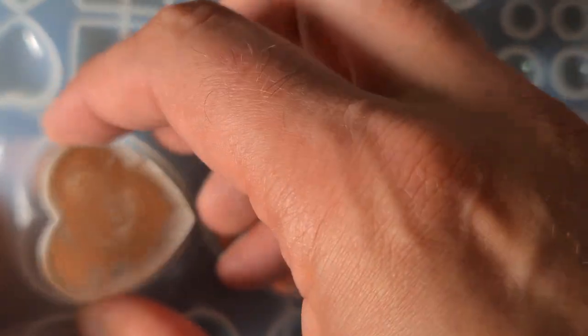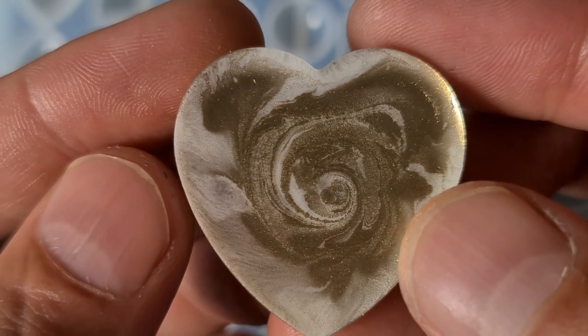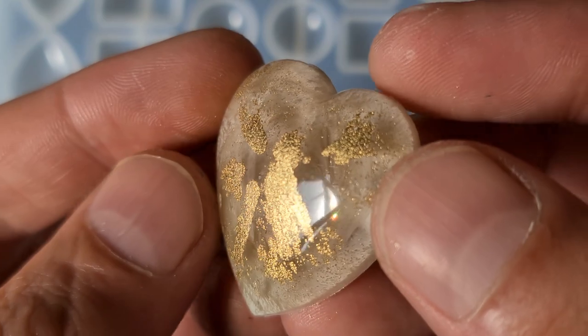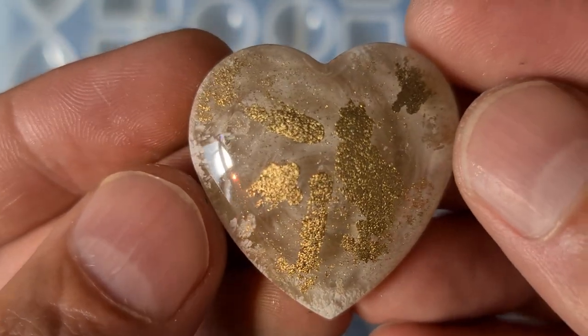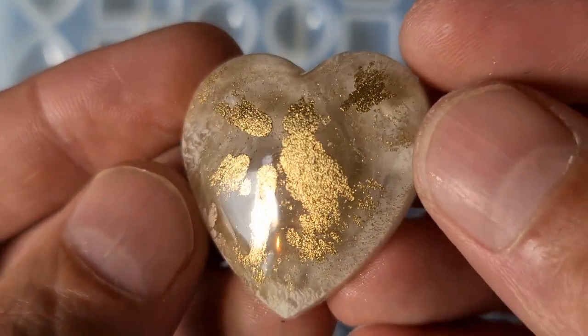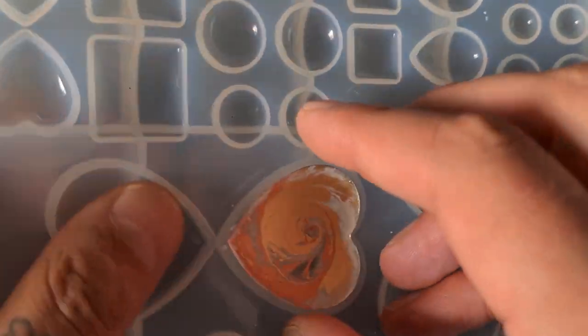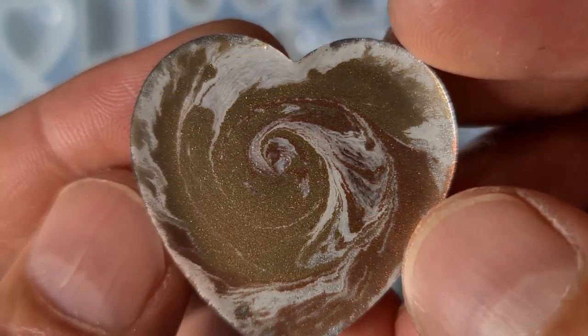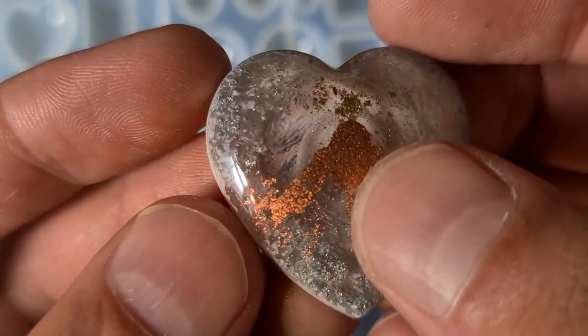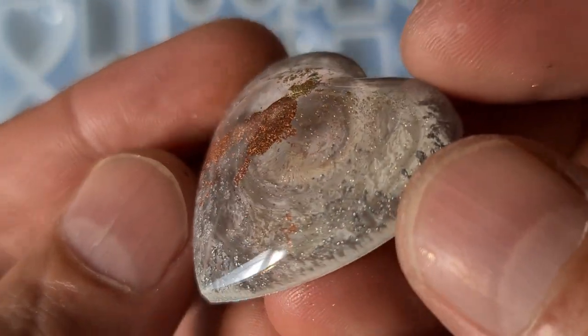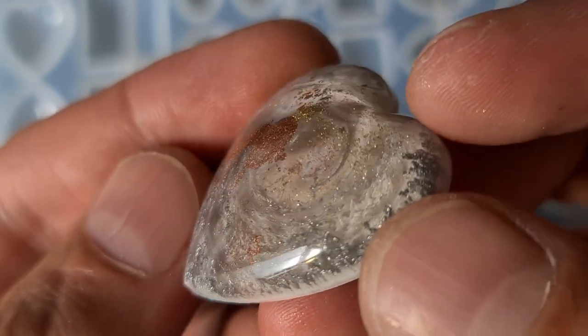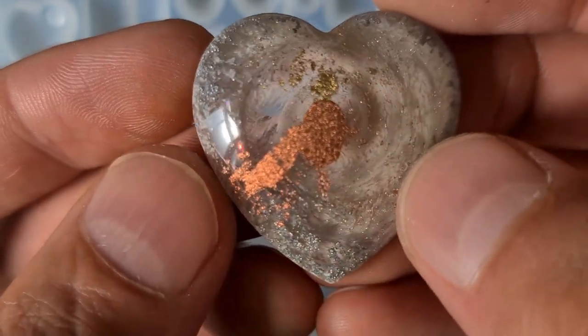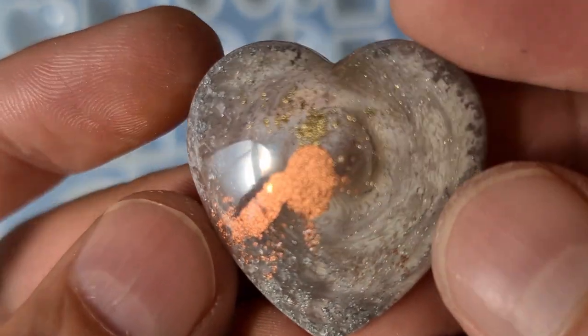Let's see the hearts. I do prefer the hearts with the metallics. Oh, blobs. Lots of blobbing. And I presume this one's going to be exactly the same. Oh, just the copper, which is a shame. Again, you might like that kind of thing, but to me that's just a bit too much. But that will teach me for speeding things up.